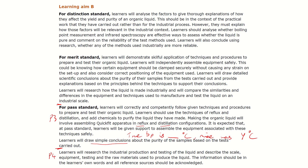For P4, you need to get on Google and find four different things: scale, equipment, testing, and raw materials required to make ethyl ethanoate industrially. If you type in 'ethyl ethanoate production' you'll see industrial and chemical engineering websites appear. The raw materials are the chemicals used initially to make it. There are different methods — the Fischer esterification method, and the Tishchenko method, which is more favourable these days. Look up the chemicals involved in those.